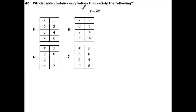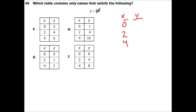Which table contains only values that satisfy the equation? Using x values 0 through 2: the y value is the output and x is the input. So 2 times 0 is 0, 2 times 2 is 4, 4 times 2 is 8. I'm looking for 0, 4, 8 in the table.